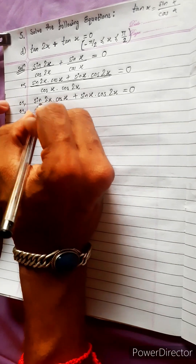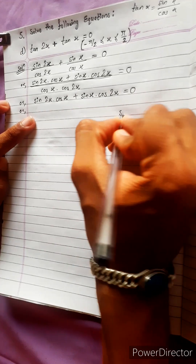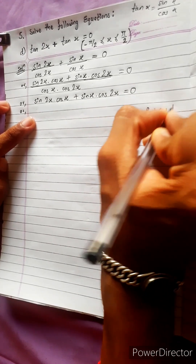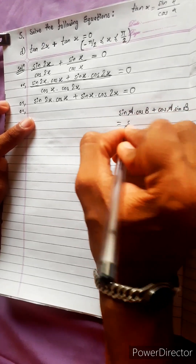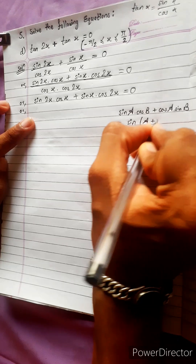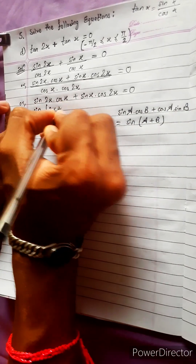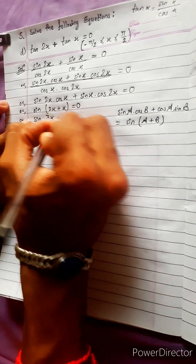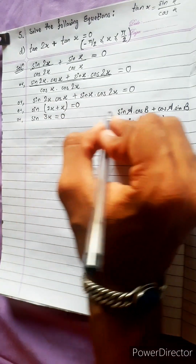Applying the sum formula: cos a·sin a·cos b, sin a·cos b, cos a·sin b, sin a·cos b plus cos a·sin b·sin c equal to 0. Therefore, sin 3x equals 0.